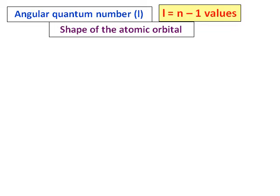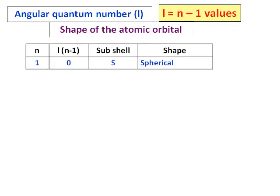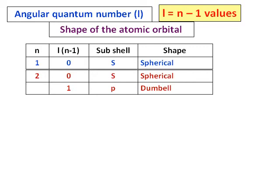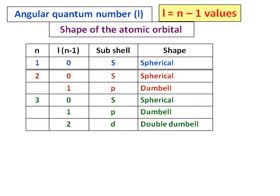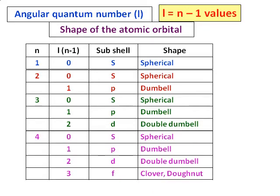If n = 1, l can take a value of only 0. If n = 2, l can take all values less than n, that is 0 and 1. In analogy to a building, if I have entered the first floor, the value of shape can only be l = 0, so I have only one room there with l = 0.